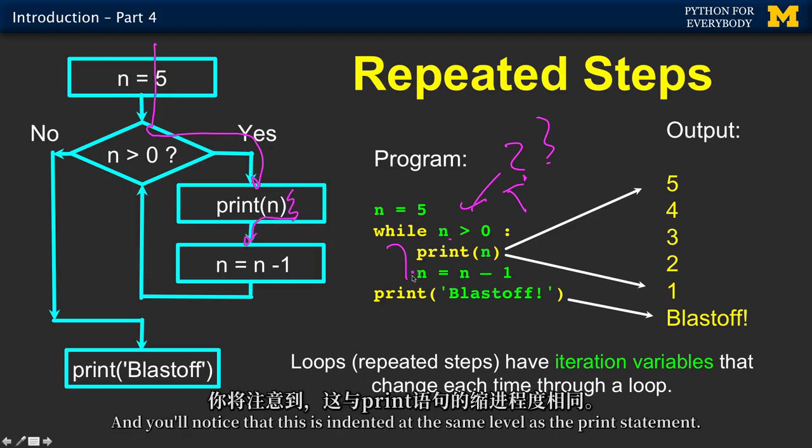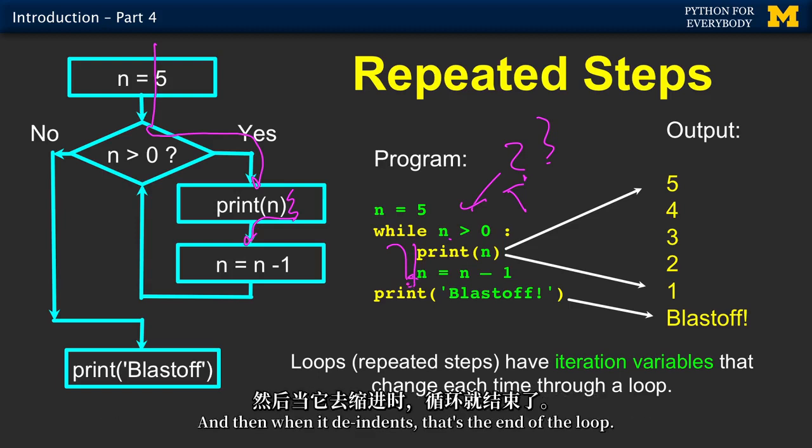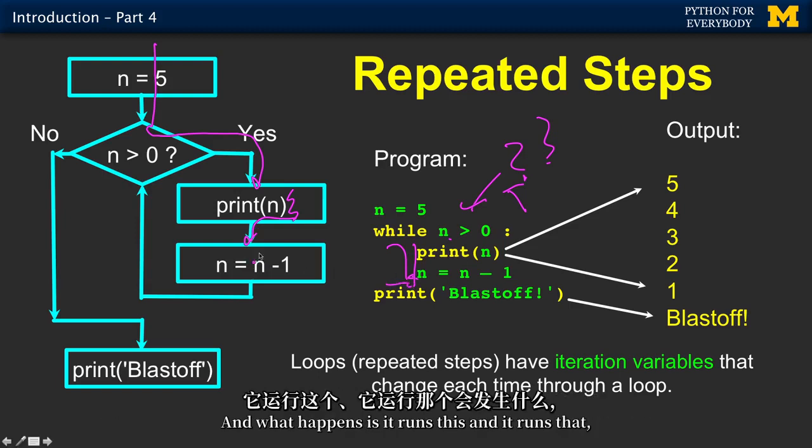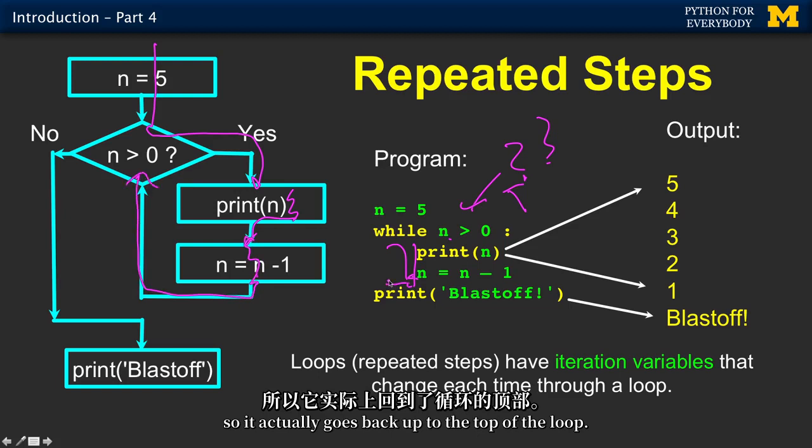When it de-indents, that's the end of the loop. What happens is it runs this, and it runs that. But then what does it do? Well, it's at the end of the loop. So it actually goes back up to the top of the loop, back up to the while statement. We printed n out, which was five, and then n became four.